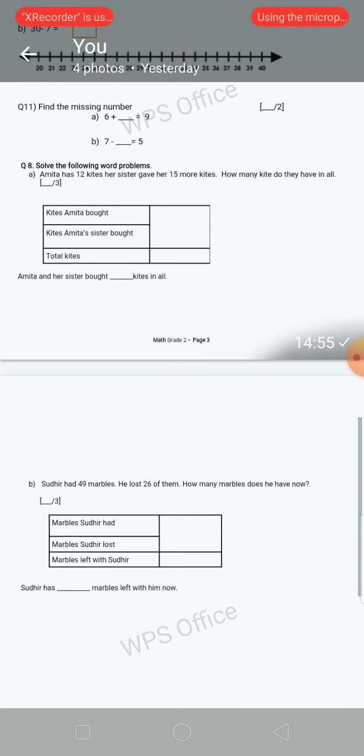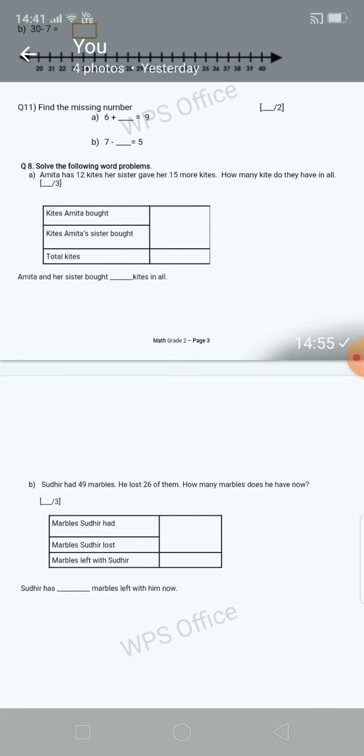Now question number 8 is solve the following word problems. I'm going to read the word problem: Amita has 12 kites, her sister gave her 15 more kites. How many kites do they have in all?